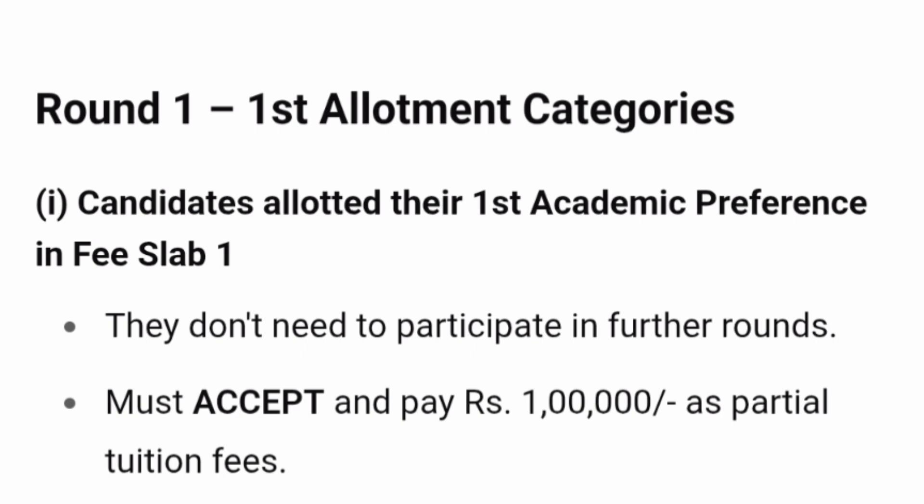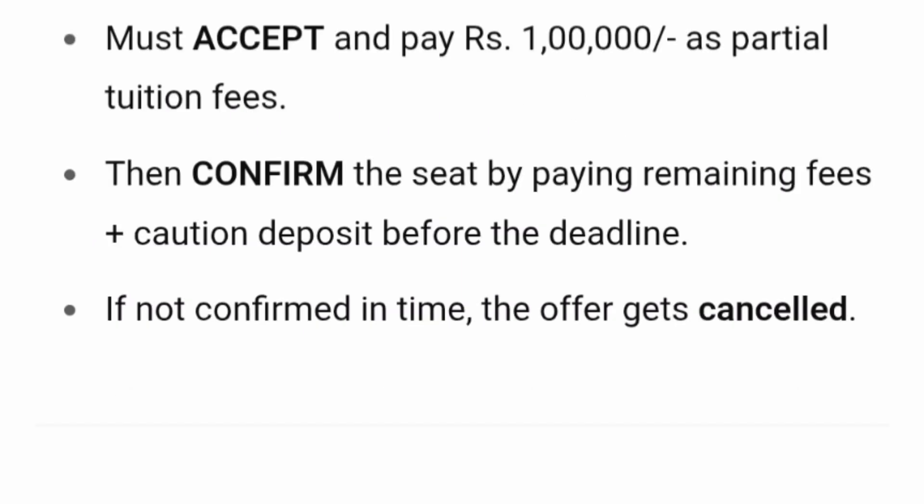Scenario 1: Candidate is allotted their first academic preference in fee slab 1. This student is the happiest because they got their first academic preference and also in the lowest fee slab. They do not need to participate in any second round of counselling. This student should accept and pay 1 lakh rupees as a partial advance fee, then confirm the seat by paying the remaining fees before the given deadline. If they do not pay the second installment in time, the offer will be cancelled.